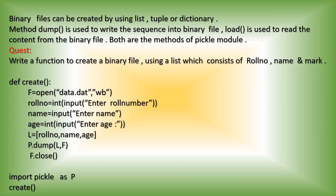Now we can create a binary file. In a binary file, data is written in the form of a list, tuple, or dictionary. We can use these sequence types to write data into the binary file. In a text file, we are just writing strings directly. But in a binary file, by using a list, tuple, or dictionary, you can write the data.